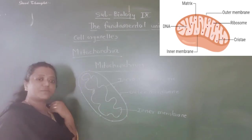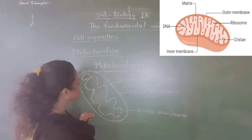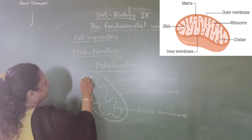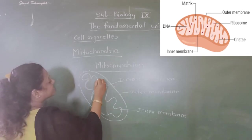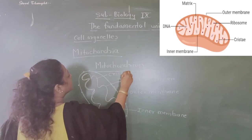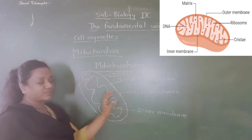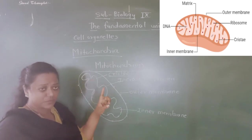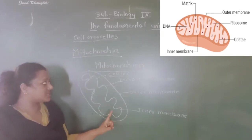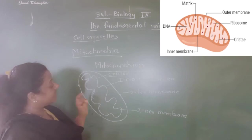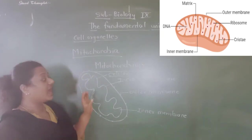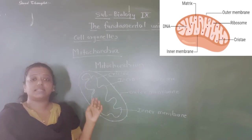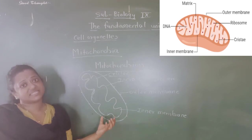Now, what is present inside and what is the function? One more thing about the structure: the inner membrane has finger-like projections to increase the surface area, and those folds are called cristae. So the outer membrane is porous, and the inner membrane has finger-like projections called cristae. I hope the diagram and structure are clear for you.